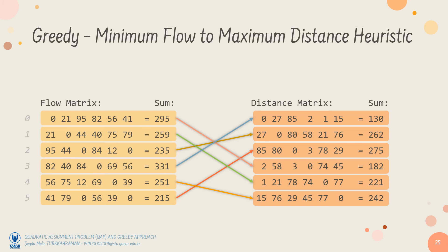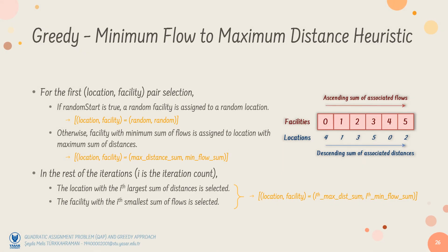If we go back. Here, for the random start case, both the first facility and the first location are randomly selected. Otherwise, we start applying the minimum flow to maximum distance rule from the first pair.